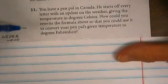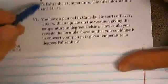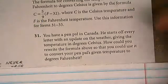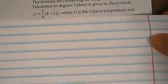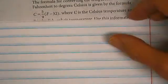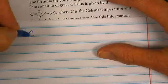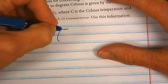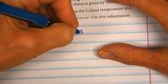Well, what that means is from the formula given here, we have to rewrite to get F by itself. So C equals five-ninths times F minus 32.